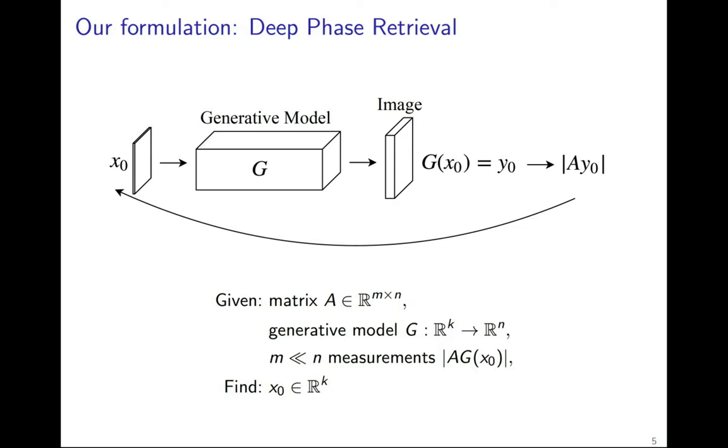The following is a more precise formulation of our problem. Given the absolute value of linear measurements, we want to recover this signal y0, assuming it is the output of a generative model. Thus, in order to recover y0, we recover the original latent code corresponding to it, from which y0 is obtained by applying the generative model G.